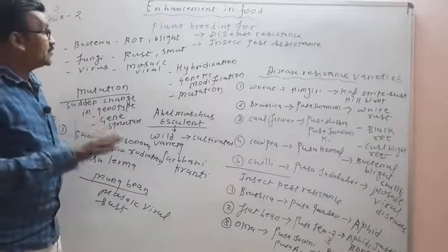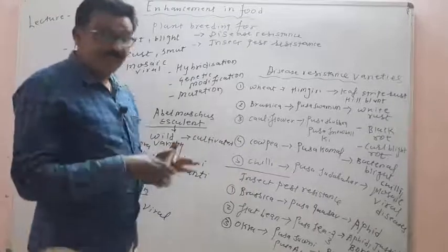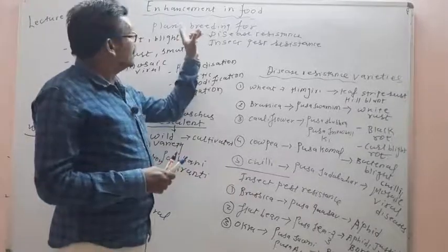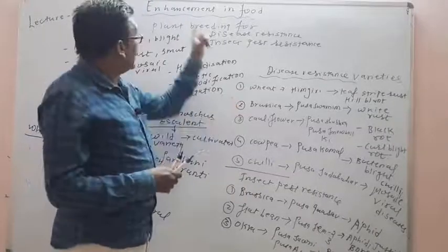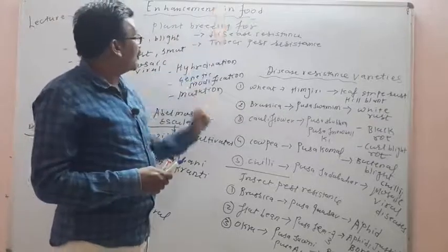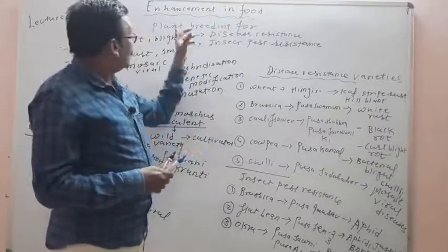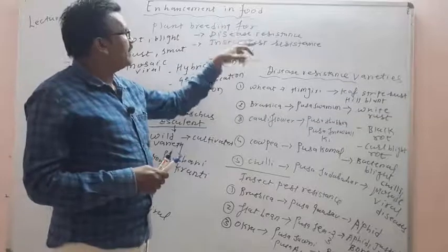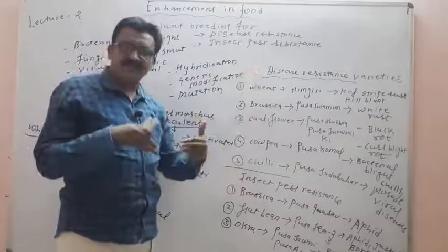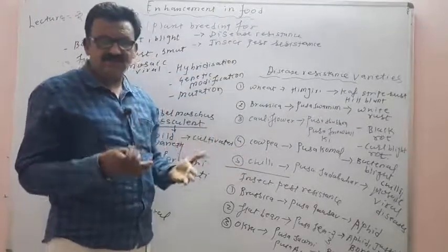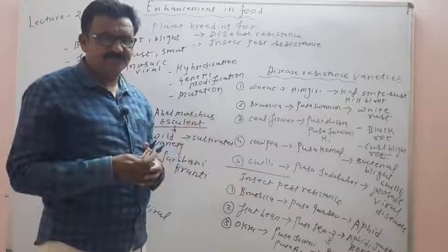So here we will stop. This is the second lecture in enhancement in food production, and the topic is plant breeding for disease resistance and insect pest resistant varieties. Thank you.